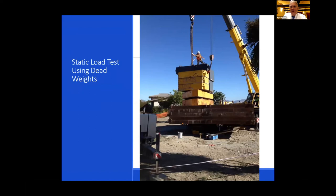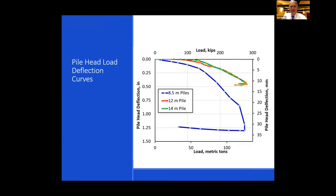To save money and allow three tests with a limited budget, we moved 270 tons of dead weights around to load over the top of each pile for static load tests. For the 8.5-meter pile we obtained a complete load-deflection curve, while for the other piles we reached about 10 mm settlement, capturing most of the side friction and some end bearing.